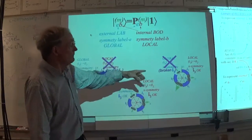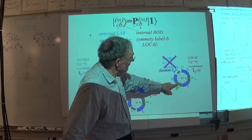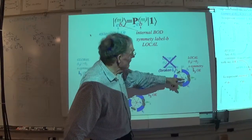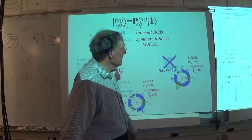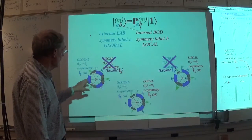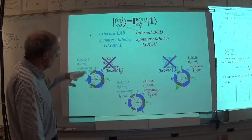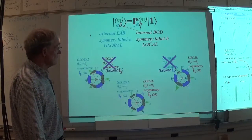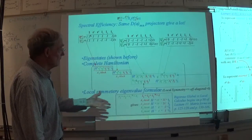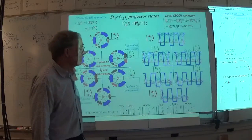Here's a case where the global symmetry is broken. The local symmetry is all symmetric. Here the local symmetry is broken — look at that: small, big, small, big. But the global's fine. And there, they're both there. So when you actually look at the waves, that's what happens.